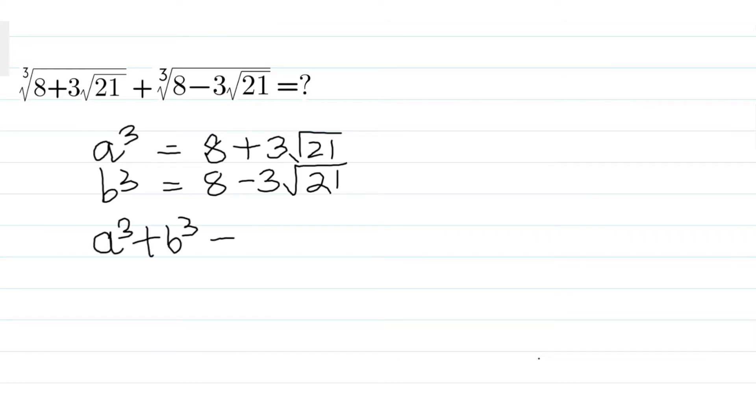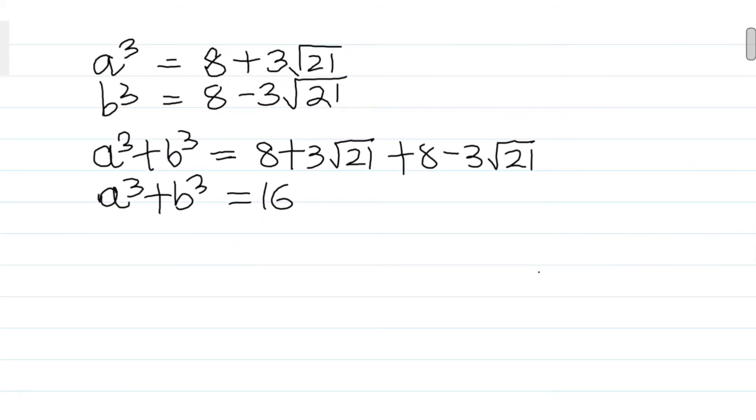equals 8 plus 3√21 plus 8 minus 3√21, and what we'll get here is a³ plus b³ equals 16. So first of all, we got a³ plus b³ equals 16. This is our equation 1.